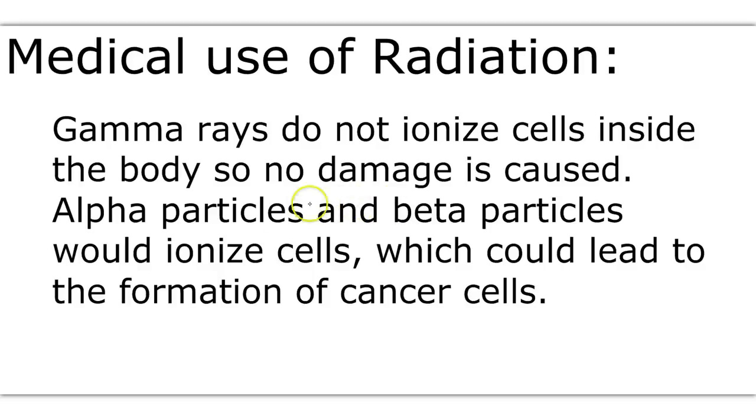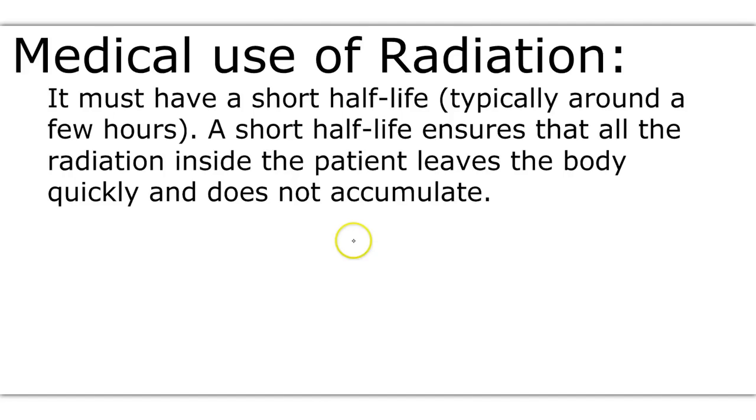Gamma rays do not ionize cells inside the body, so no damage could be caused. However, alpha and beta particles would ionize cells or mutate them, which could lead to the formation of cancer cells, which is why it's most dangerous to swallow alpha and beta-emitting radioisotopes. Whatever radioisotope is swallowed must have a short half-life, a few hours, so that by the time an hour or so has passed, it will have decayed down to a point where it's stable and thus safe for the body. A short half-life ensures that all radiation inside a patient leaves the body quickly and does not accumulate.